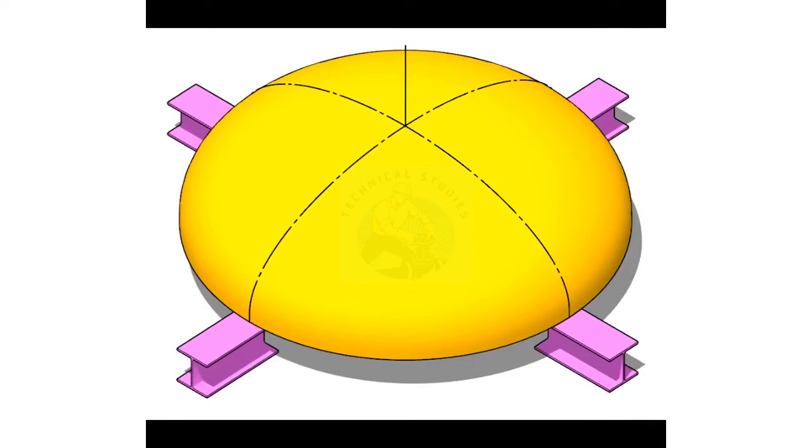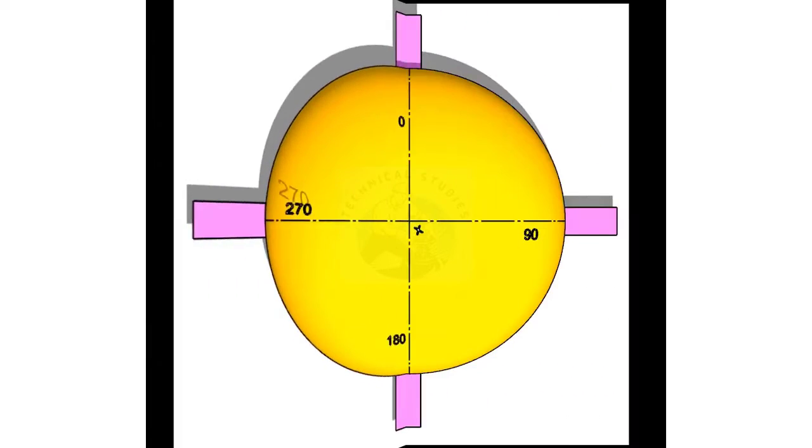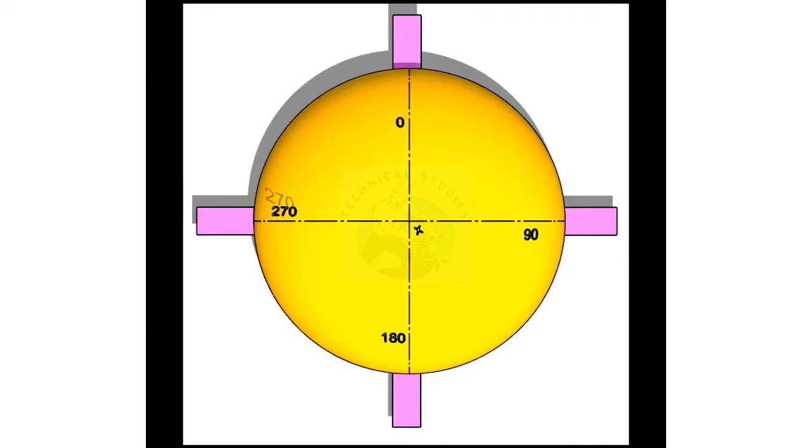Now, put the dish end upside down and level. Draw lines through the center, connecting the previously marked points. Mark the 0, 90, 180 and 270 degrees.